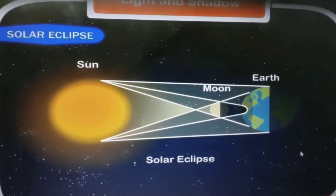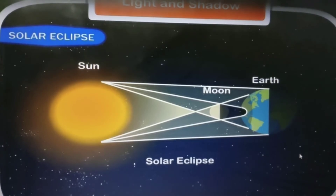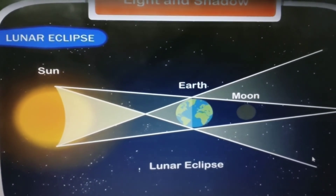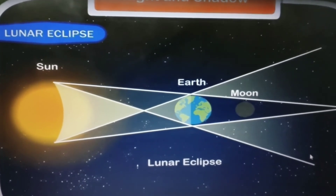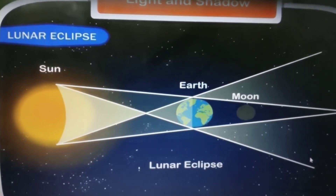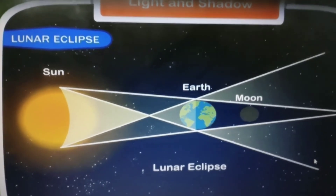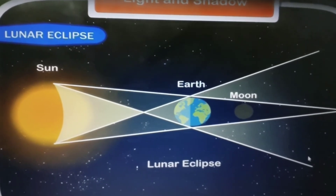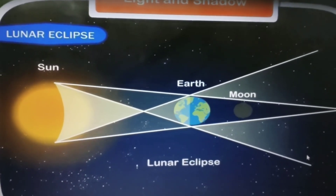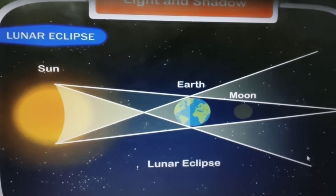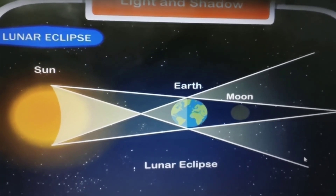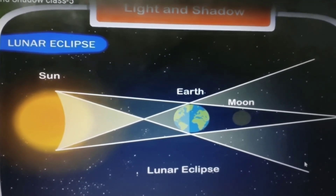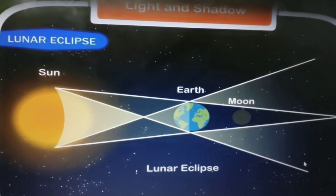Let us learn about the lunar eclipse. In the diagram of the lunar eclipse, the difference from the solar eclipse is that in the solar eclipse, the moon is between the sun and the earth, whereas in the lunar eclipse, the earth is between the sun and the moon. When earth comes between the sun and the moon, lunar eclipse occurs and the shadow of the earth falls on the moon.